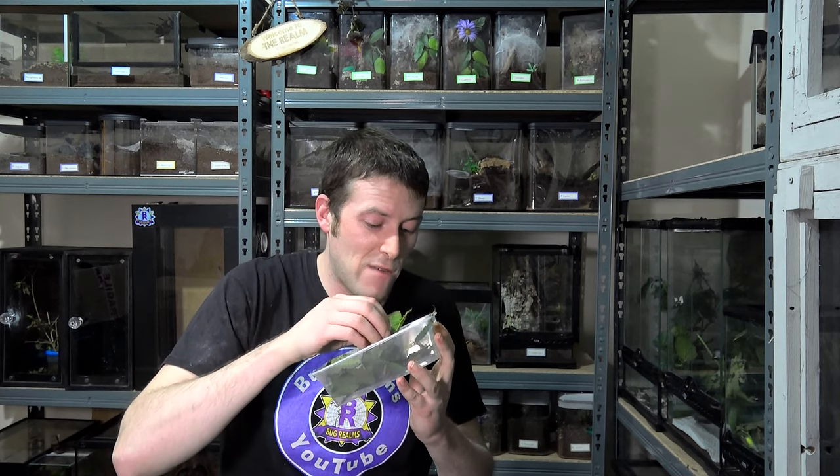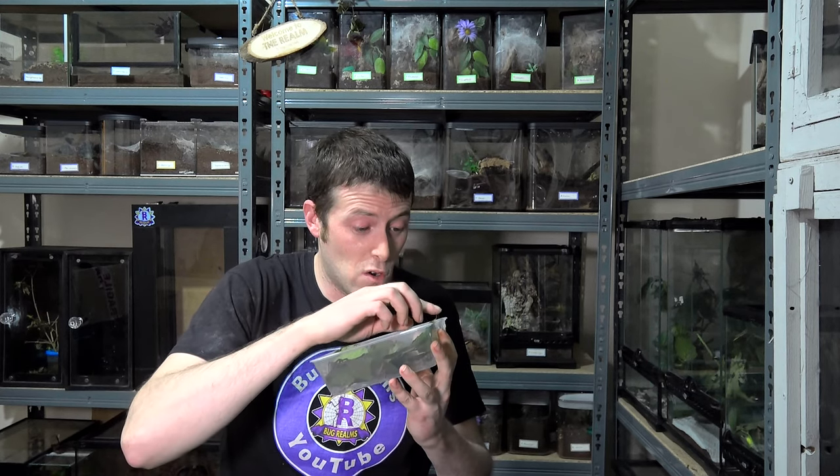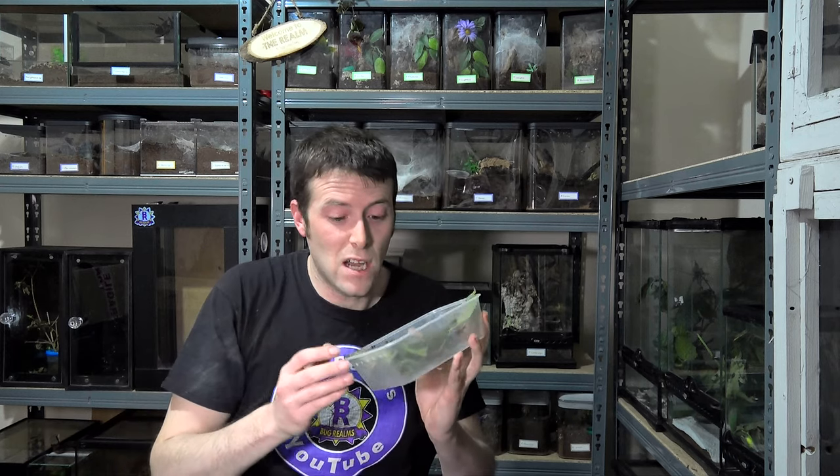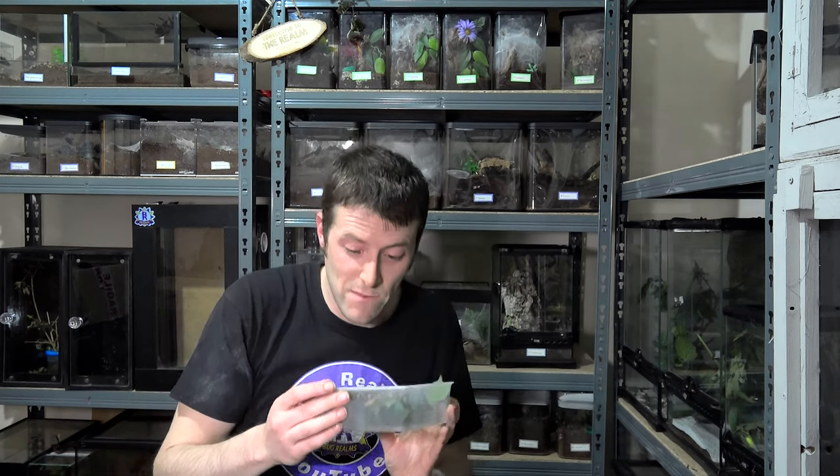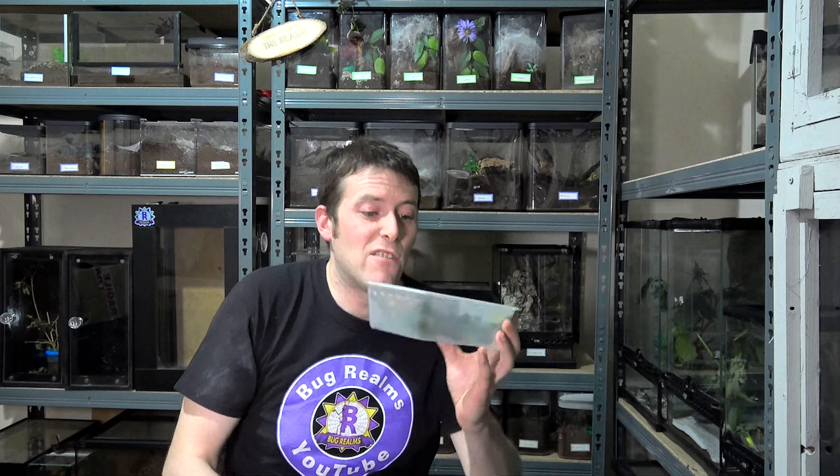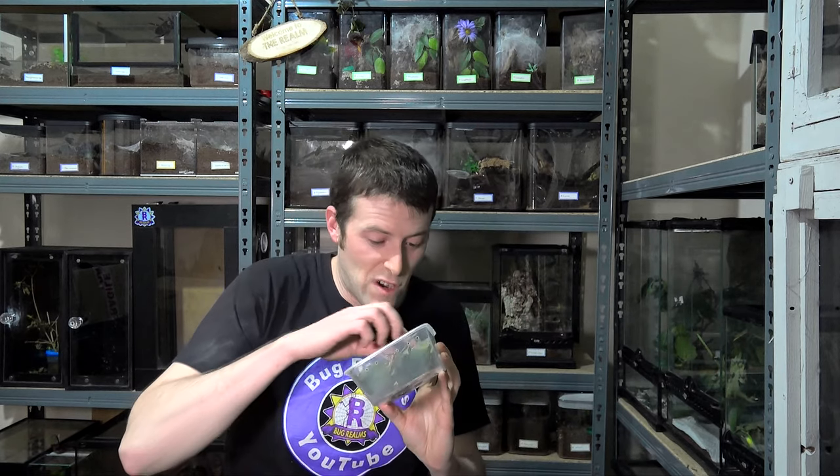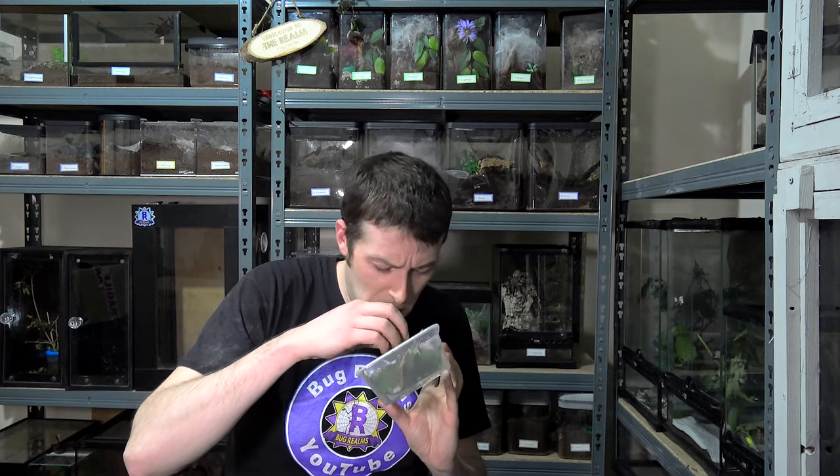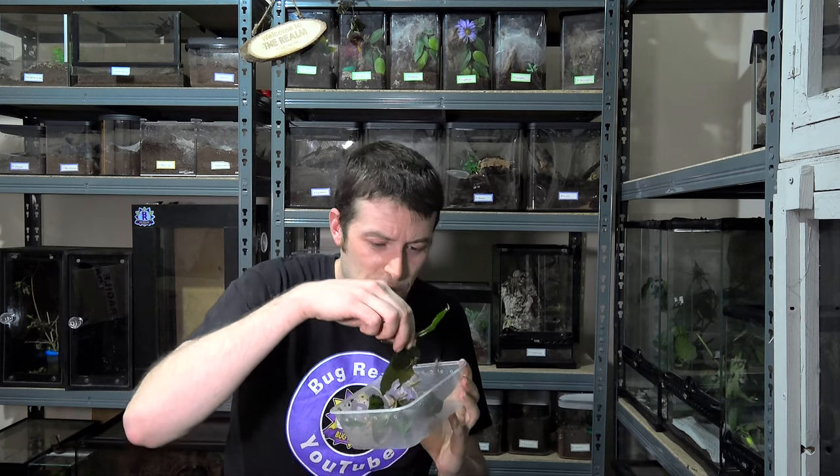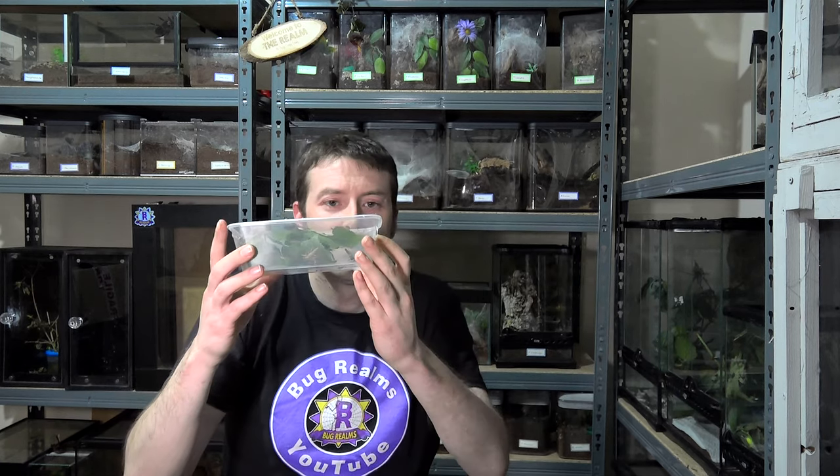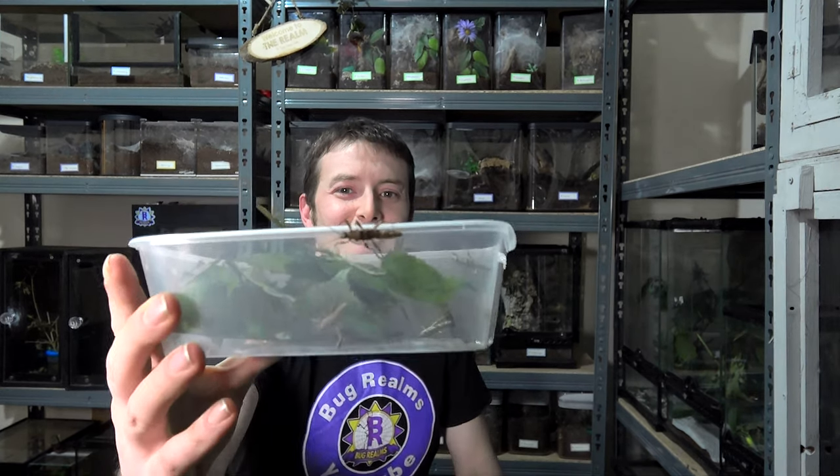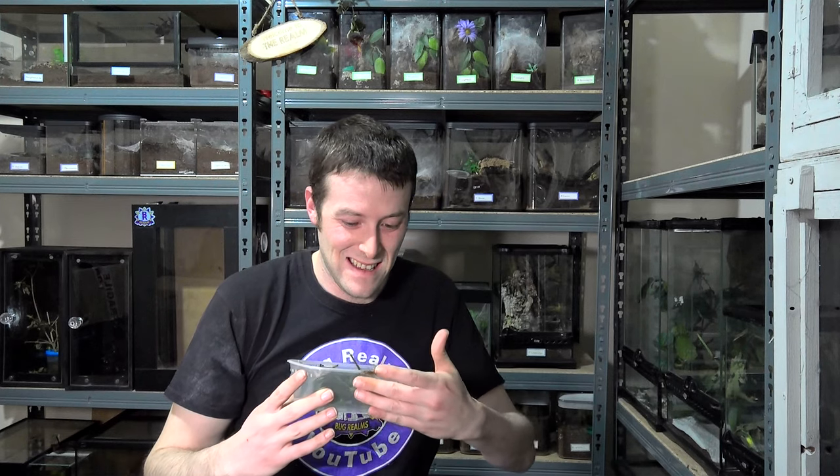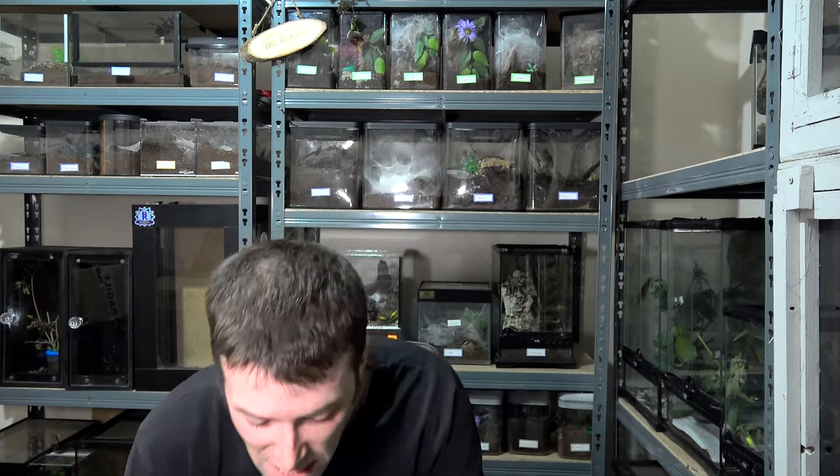They're also a slightly more pricey species to get hold of and they've held their price for a long long time. Now these are good sized nymphs. Although small, the seller is not selling them far too young for transit and so far I see no deaths in here. There's one breaking free. Cool. I'll give you a better close up of these at the end of the video. We're going to open the other box.